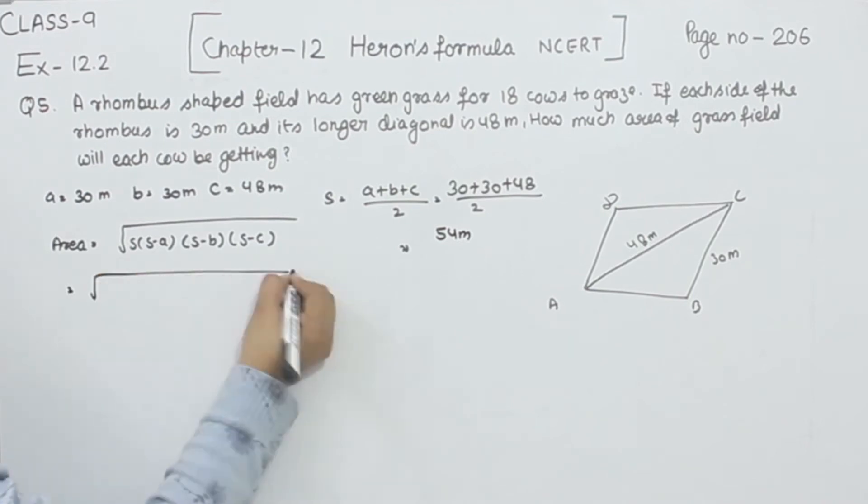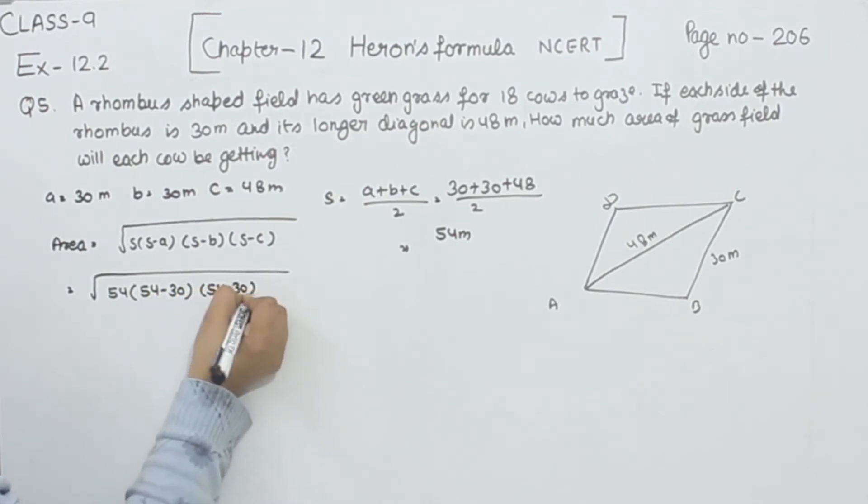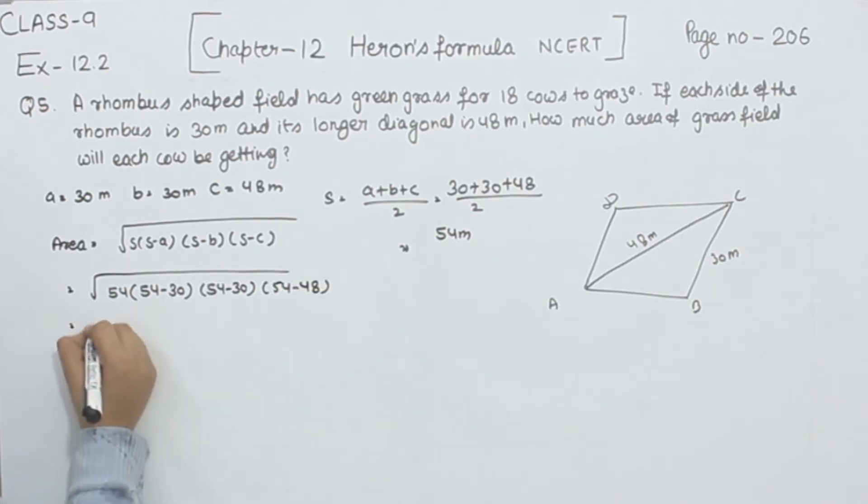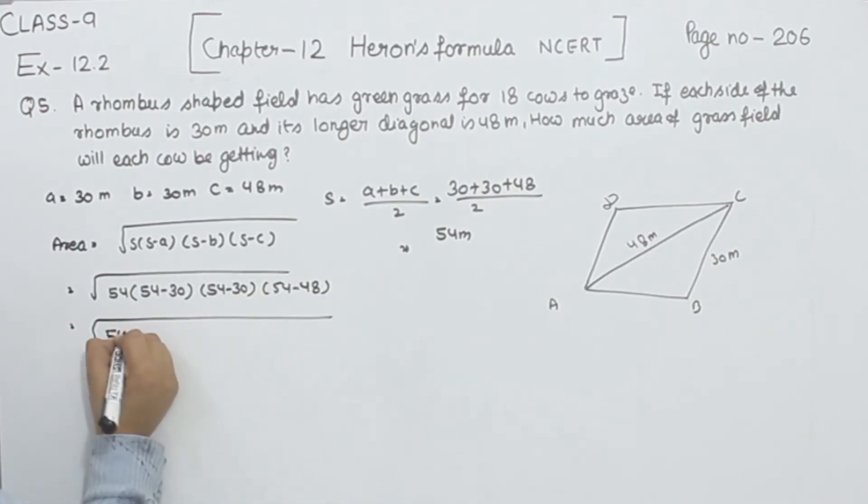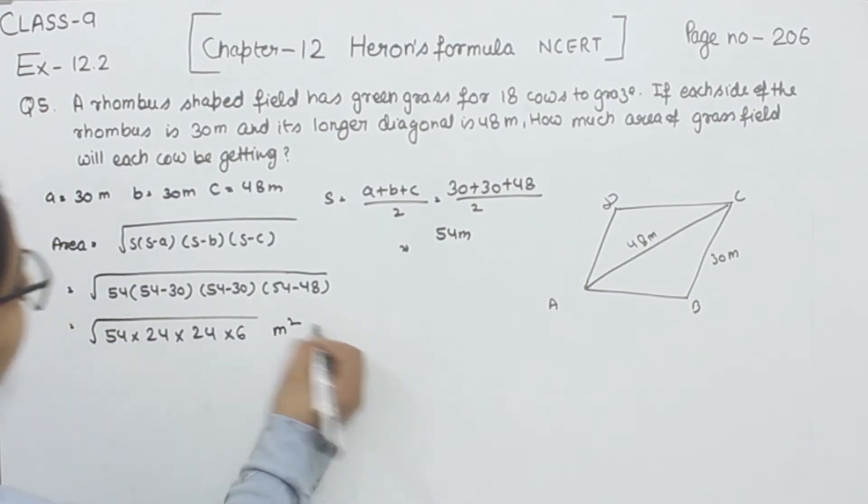So 54 multiply by 54 minus 30, 54 minus 30, and 54 minus 48. Now 54 multiply by 54 minus 30, we have 24, then again 24, now multiply by 54 minus 48, we have 6 meter square.